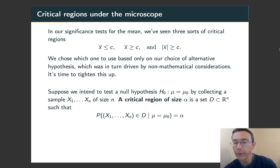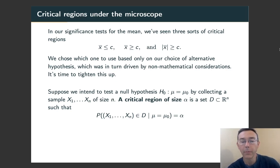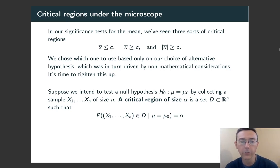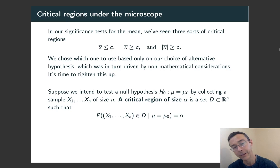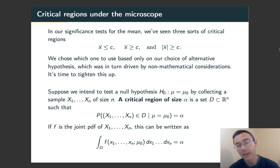First, the definition. We're testing some null hypothesis, mu equals mu-naught, by collecting a random sample of size n. We're going to define a critical region of size alpha to be a set in R^n such that the probability of randomly selecting a point from R^n that's in that region is alpha. If we have a PDF for the variable x that we're taking a sample from, we can write a joint PDF and write that probability statement as an integral.